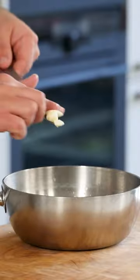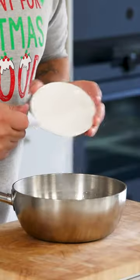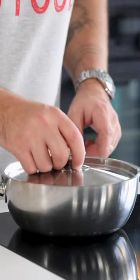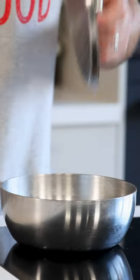Add it to the saucepan together with a lime leaf and four grams of salt. Bring this to a boil and once it's boiling turn off the heat, cover the pan with a lid and let it marinate for one hour.